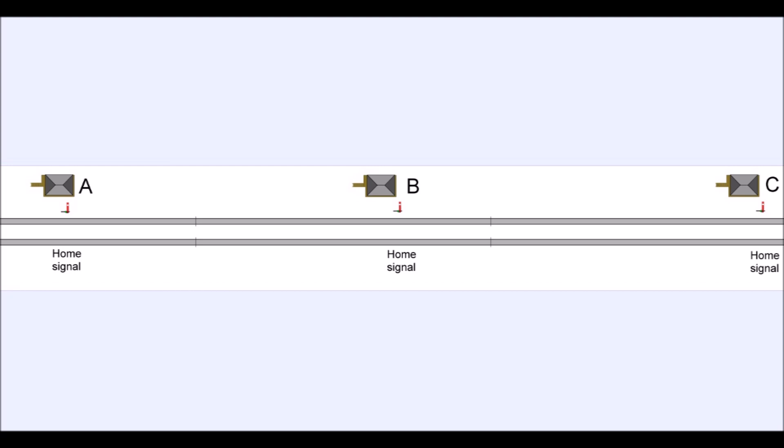So essentially, if A has got a train standing at his red stop signal outside his signal box and he wants to send it down the line, he asks B, is the line clear? If the line is clear, B will respond and tell him so. And then A can pull off his signal and the train will then progress through that block section until it gets to the signal at signal box B when it will stop again.